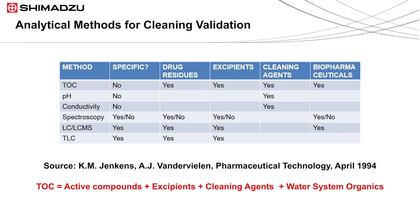The second method, pH, is also a nonspecific method, but it can measure only cleaning agents. The third, conductivity, is also nonspecific and can only measure cleaning agents. For spectroscopy, the specificity is yes/no, because many compounds can absorb at 254 nanometers. So if we have overlapping wavelengths for different compounds, it's going to be nonspecific. For drug residues, excipients, and biopharmaceuticals, spectroscopy gives yes and no results, and it cannot measure cleaning agents.